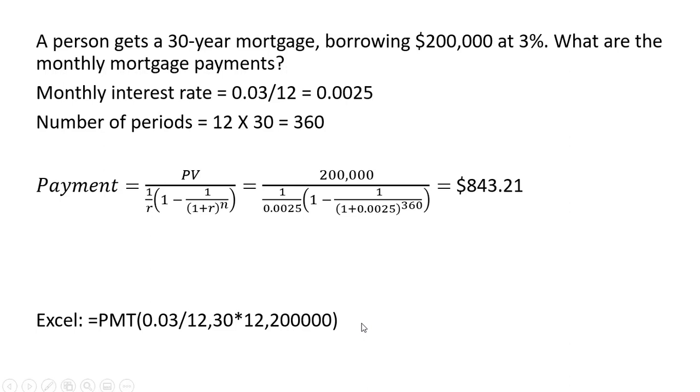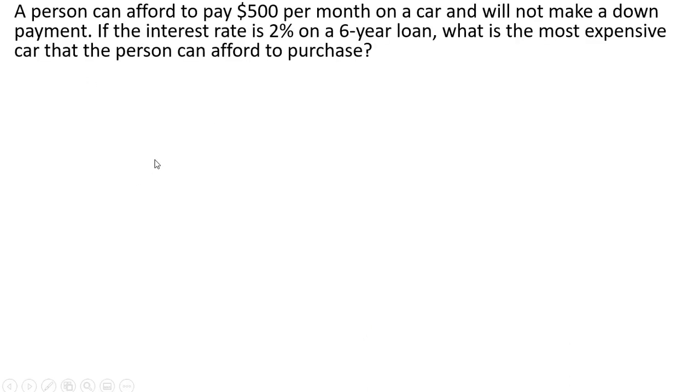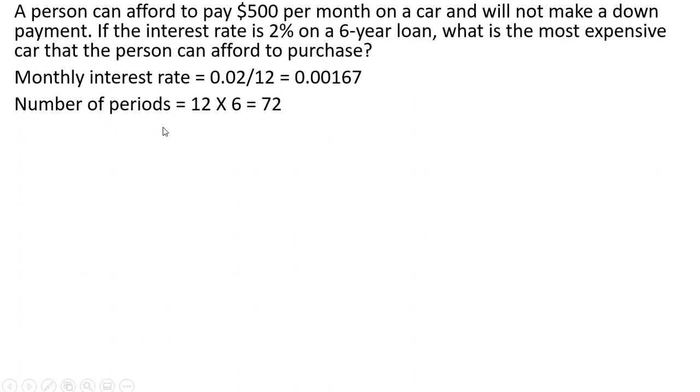Alright let's do another example. A person can afford to pay $500 per month on a car and will not make a down payment. If the interest rate is 2% on a six-year car loan what is the most expensive car that the person can afford to purchase. So here is our monthly interest rate. The number of periods is just going to be 12 payments a year times six years or 72.